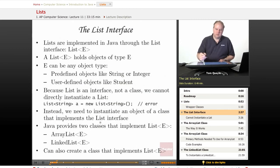Lists are implemented in Java through the List interface, which is designated List<E>, with a capital E inside angle brackets. And a List<E> holds objects of type E. E can be, in fact, any object type.